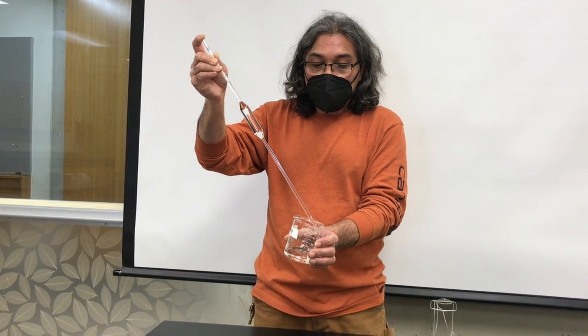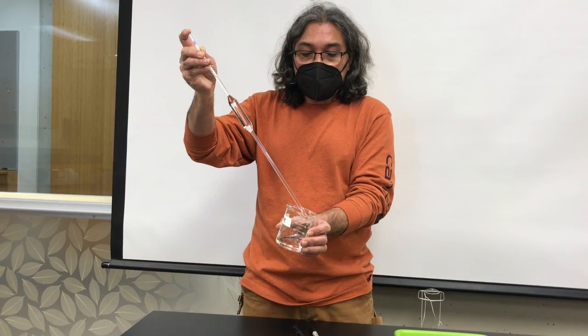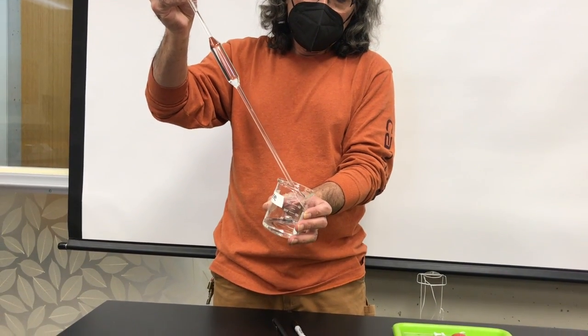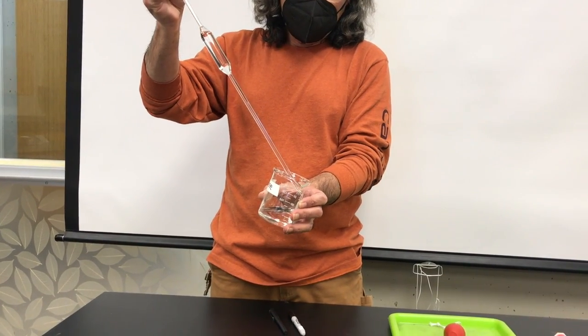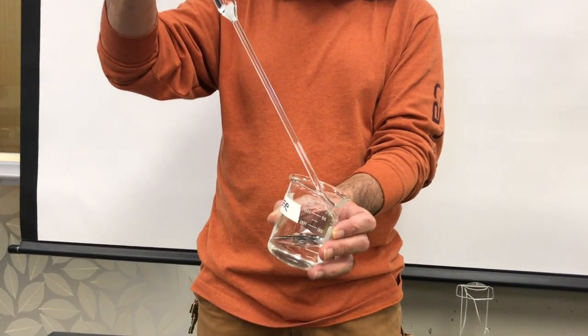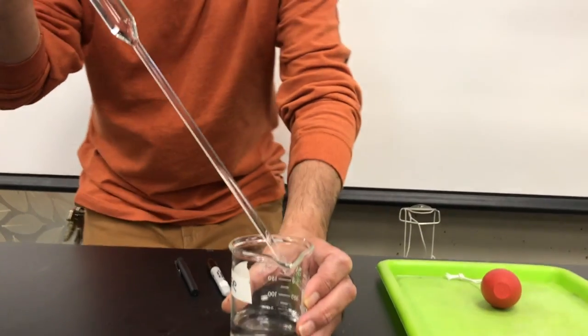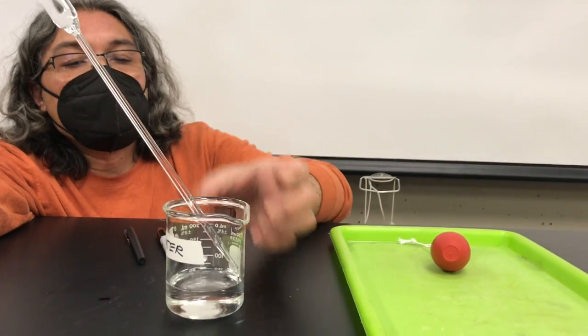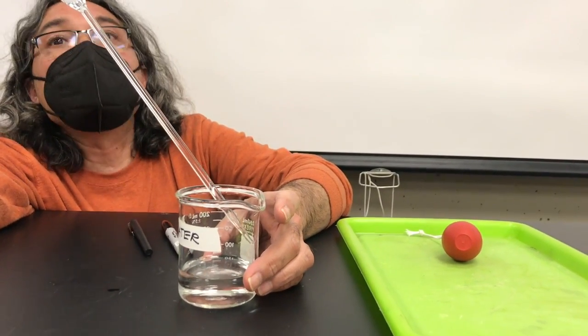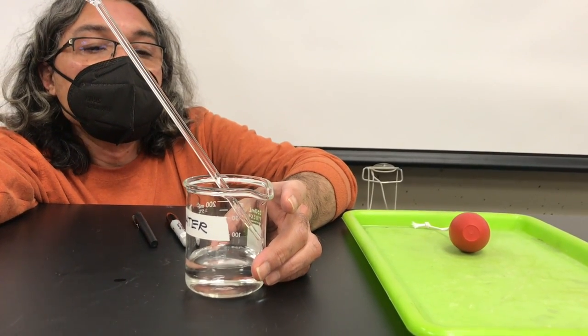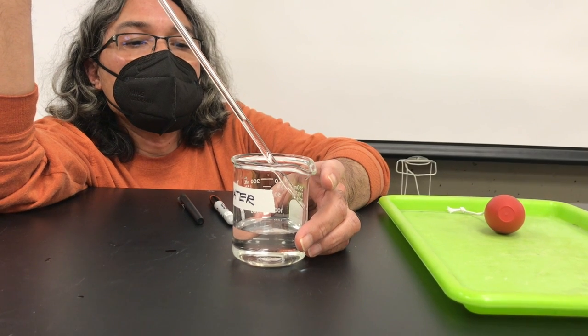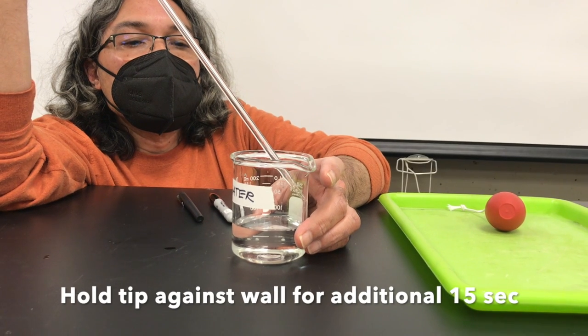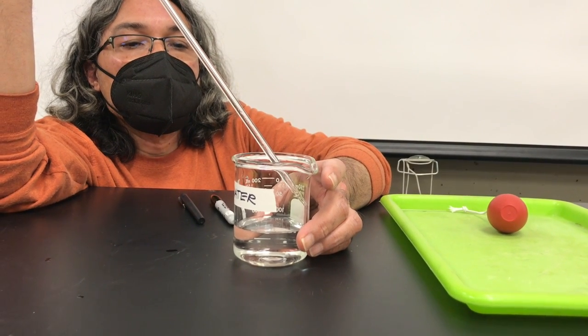You want the tip of the volumetric pipette to touch the inside wall of the beaker. This could also be another volumetric flask. And then you're just going to let the liquid flow out on its own. So I'm doing this while the tip is actually touching the inside wall of the container where I'm transferring the liquid.